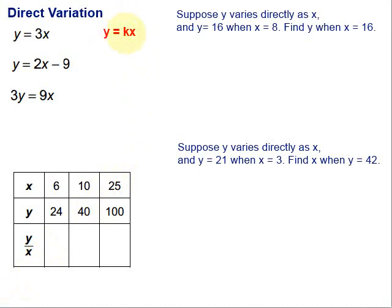We just have that multiplication going on there. One of the first things that we can do is identify a direct variation equation. It should be in this form or we should be able to write it in this form. Let's take a look at these.